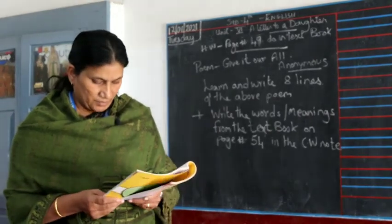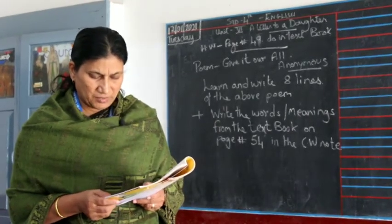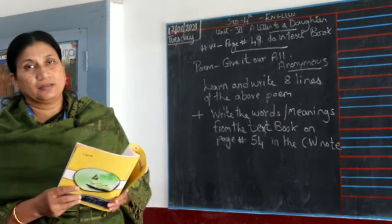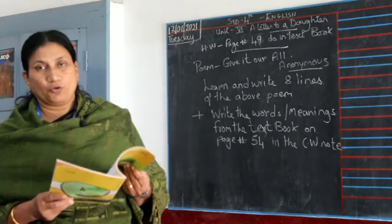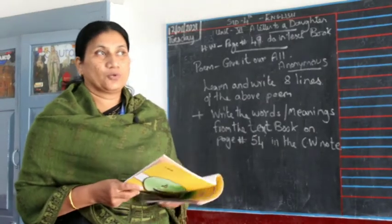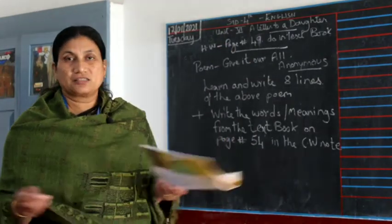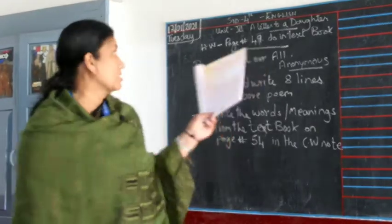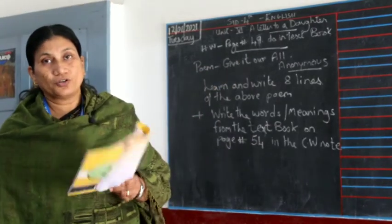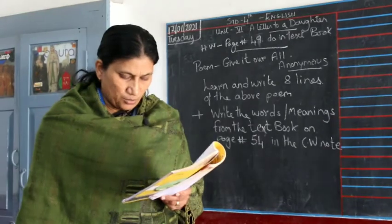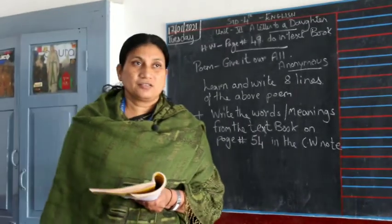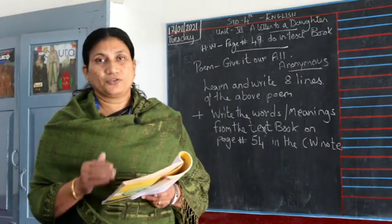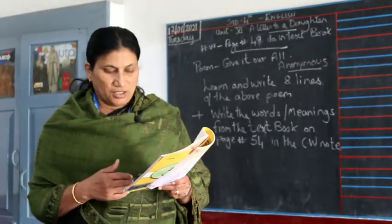The fourth main: correct the following statements and rewrite them in your notebook. First: 'Eklavya was a king' — children, no. Eklavya was a small boy who lived in the forest with his parents and wanted to learn archery. Second: 'Dronacharya was the prince of Hastinapura' — this is also not correct. Dronacharya was the teacher for the princes of Hastinapura; he was not a prince.